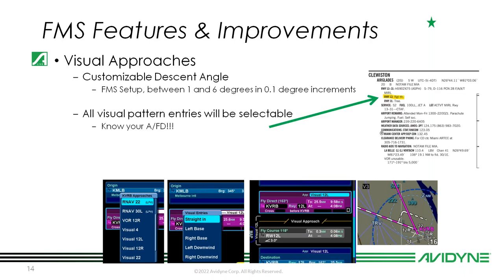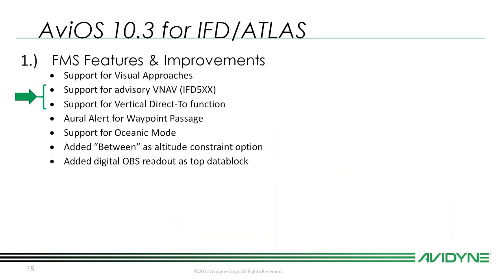With visual approaches, you'll have a customizable descent angle in your FMS setup — that's per user, between one and six degrees in 0.1-degree increments. Your straight-in, left base, right base, and downwind entries are always going to be available. It's important that if you're setting up a visual approach, you are familiar with the airport facilities diagram and how you are allowed to enter that traffic pattern for that particular airport.